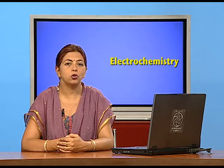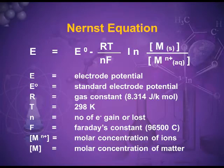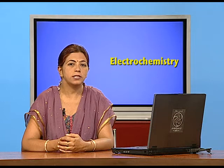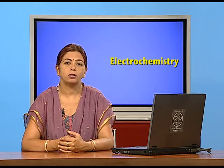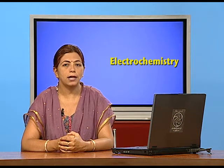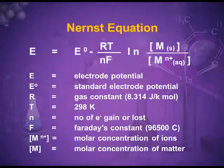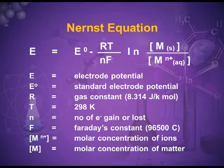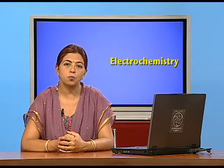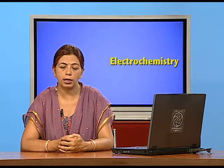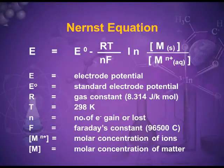Let me tell you the use of the various symbols. E is electrode potential. E naught is the standard electrode potential. R is the universal gas constant, whose value is 8.314 joules per kelvin per mole. T is 298 kelvin, that is 25 degrees Celsius. Small n is the number of electrons lost or gained in the redox reaction. F is Faraday's constant and its value is 96500 coulombs.